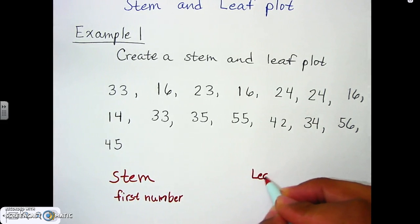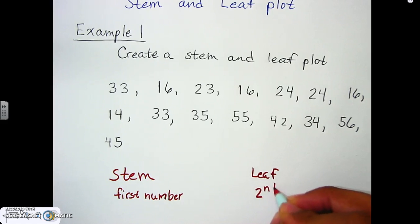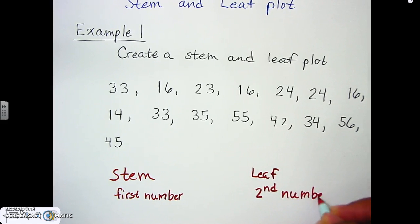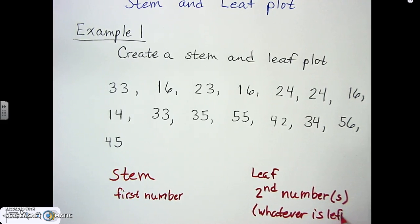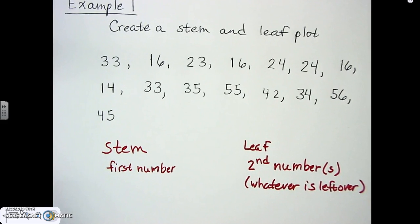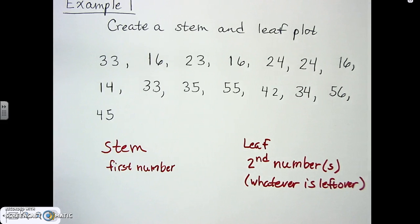The 'leaf' is the second number, or the numbers that are left over after the stem — whatever is left over is the leaf. When we do our stem and leaf plot, we always have to put it in numerical order. We start off with our lowest numbers and go up. If there's a single digit number we put a zero in, but since none of these are single digits, we don't need that here.